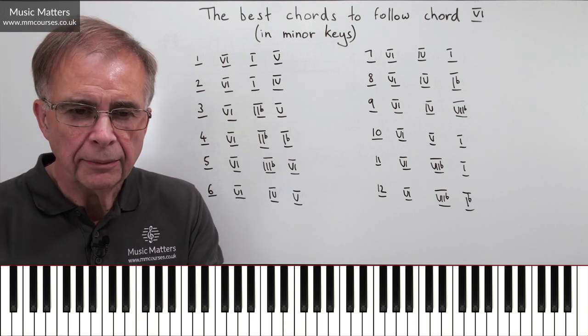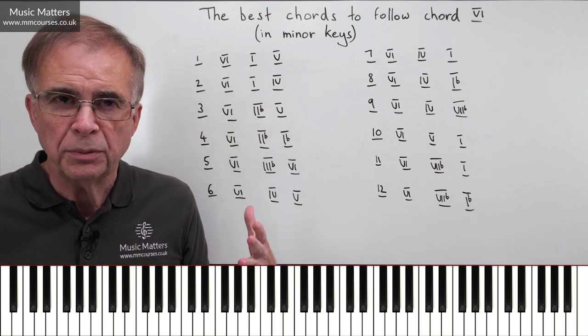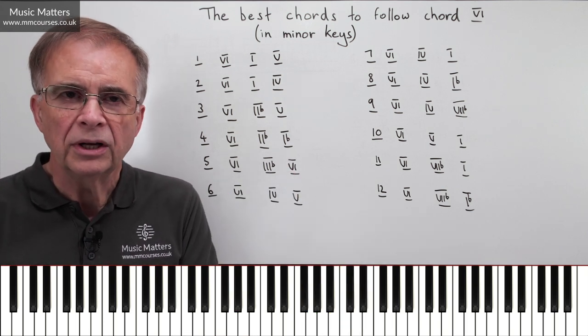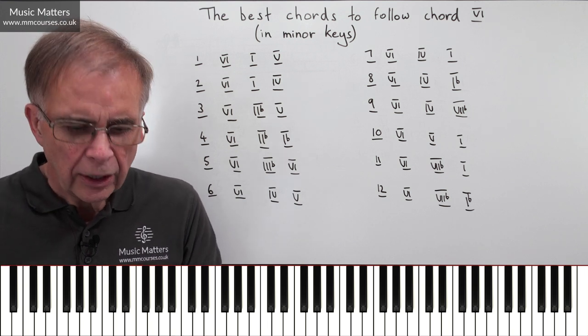Okay, well, very obvious one coming next. VI, V, I. So it's just putting that VI in before you've got a V, I cadence. So that's quite a strong, predictable one.